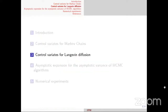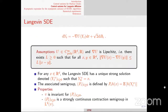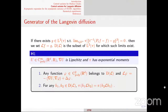Now consider control variates for diffusions — basically the same idea. You start with an SDE; I assume that the gradient of u is Lipschitz with constant L, and u is C-infinity with at most polynomial growth. The Langevin diffusion has a unique strong solution y_t(x) for any starting position x, and you can define a semi-group P_t. The classical properties hold: pi is invariant with respect to P_t, and P_t is a strongly continuous contraction semi-group in L^2(pi).